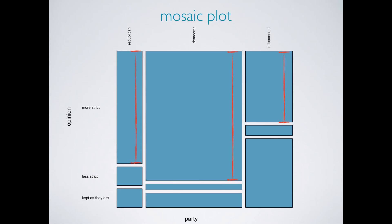We could, of course, examine other levels of the opinion variable as well, but we've already seen a relationship. I hope that this video has been useful for understanding how to use contingency tables and mosaic plots for evaluating the relationship between two categorical variables, and why segmented bar plots that display frequencies may not always be very useful for exploring such relationships. Thank you for watching.